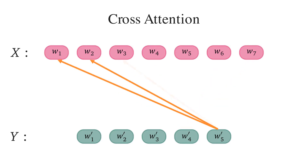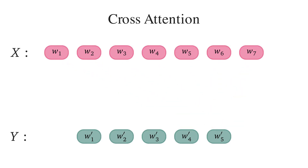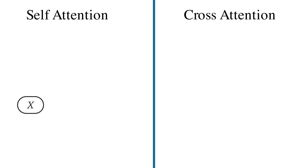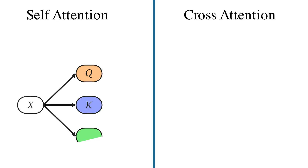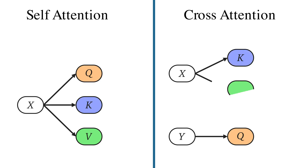For self-attention with scaled dot product, we extract matrices Q, K, and V from the single input sequence X. For cross-attention, we have two input sequences X and Y, and to make sequence Y attend to words in X, we extract matrix Q from Y and extract matrices K and V from X. Therefore, the main difference between self-attention and cross-attention is where Q, K, and V come from. After obtaining Q, K, and V, the rest of the computation is the same.